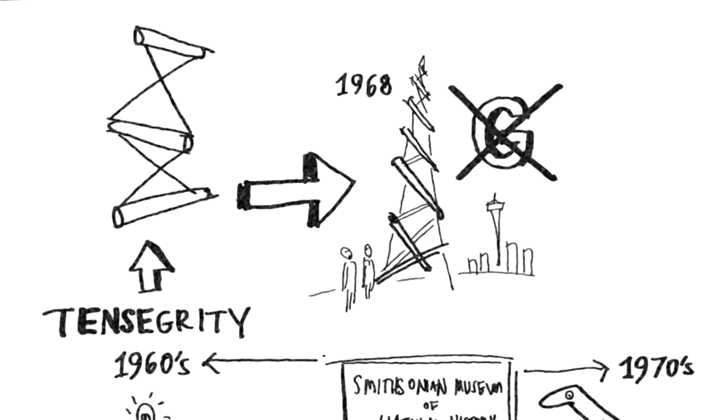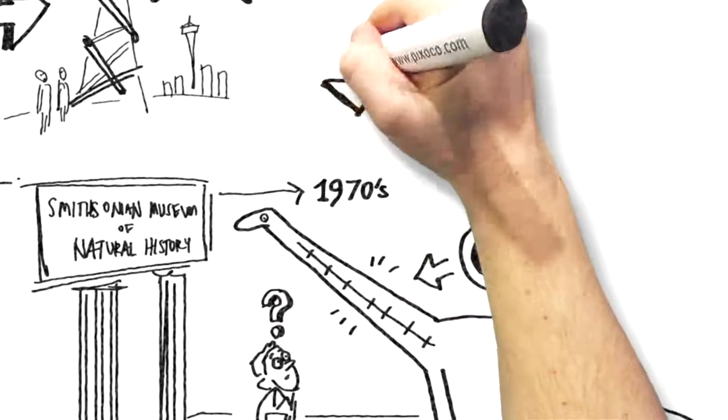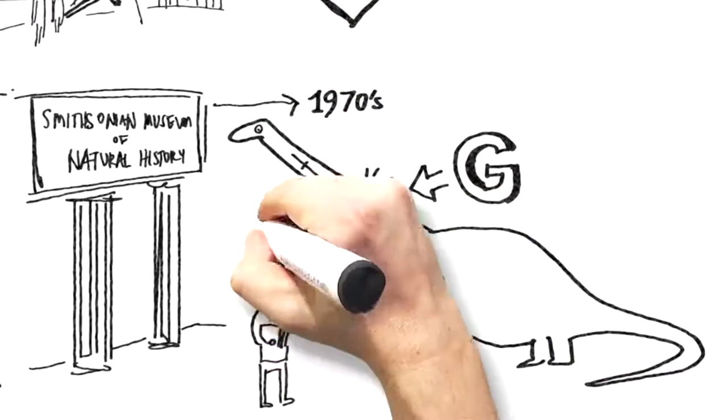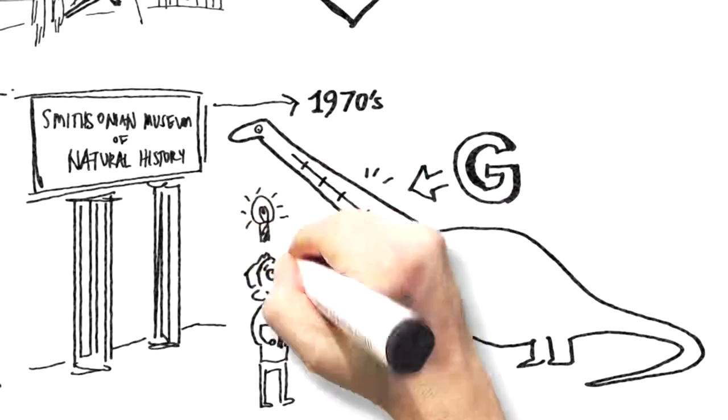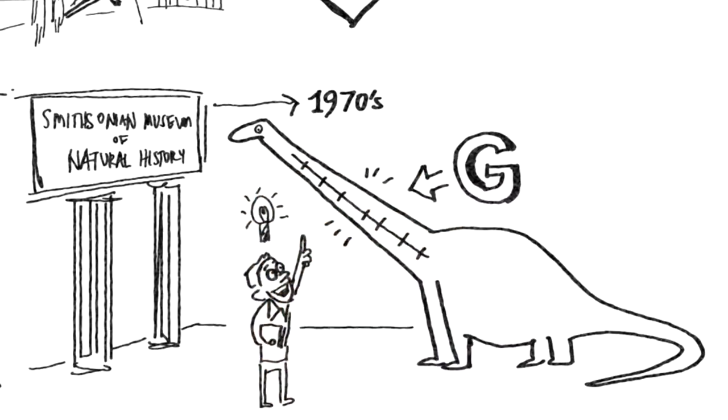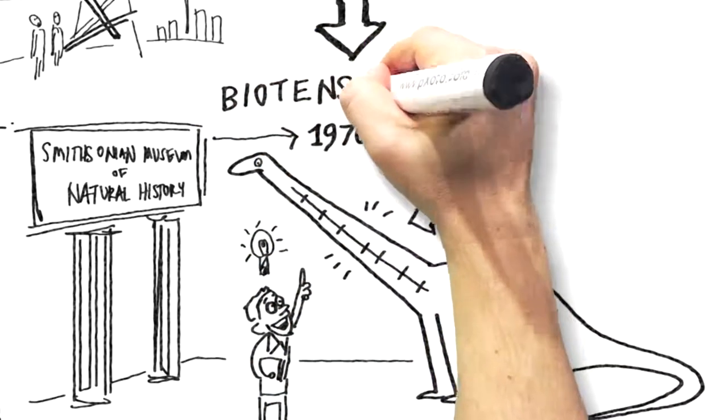Levin realized that for the body to work, it needs just this. It's the only model that by itself fits all living organisms. He called his discovery biotensegrity, and that changed our view of how the human body is built.